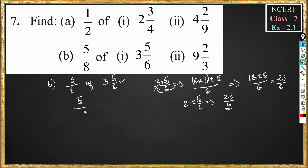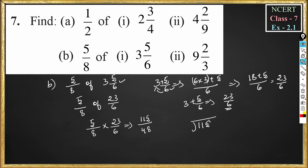Now 5 by 8 of 3 and 5 by 6 becomes 5 by 8 of 23 by 6. Since 'of' means multiplication: 5 into 23 is 115, divided by 8 into 6, which is 48. To convert 115 by 48 to a mixed fraction: 48 twos are 96, so 115 minus 96 is 19. So 2 is the whole number part, 19 in the numerator, and 48 in the denominator. The answer is 2 and 19 by 48.